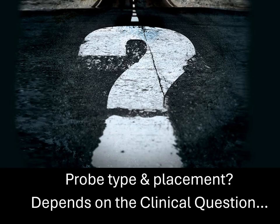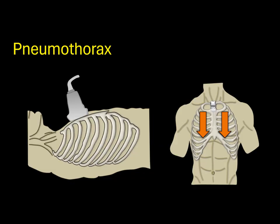So which probe should you use for the lung exam? It all depends on what your clinical question is. To evaluate for a pneumothorax, you're going to want to use the linear probe. The patient should be completely supine, and you place the probe on their anterior chest, sliding it down the mid-clavicular line bilaterally. This is because air rises to the top of the chest, so when the patient is supine, it should be just underneath the probe.